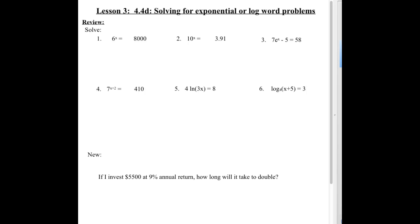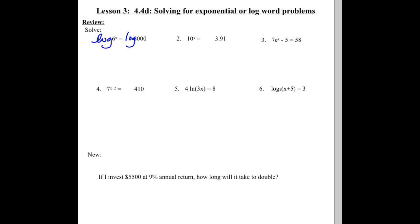Our first question: we have 6 to the x equaling 8,000. How do we solve when our variable is an exponent — when we have an exponential equation? We need to use logs. Logs undo exponents. So we are going to take the log of both sides. There's no e in this question and there's no 10, so we can pick whatever kind of log we want. Typically we just use common log unless we see an e in the problem. Powers go in front, so this becomes x times the log of 6 equaling the log of 8,000.